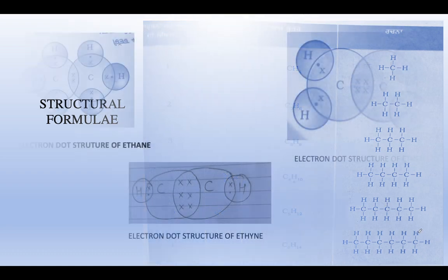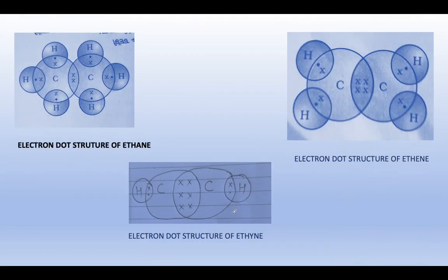Next, I have brought the electron dot structure, which is very important. Now let us look at the electron dot structure of ethane.